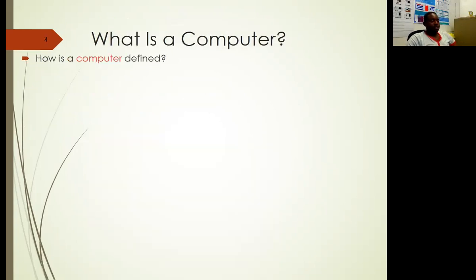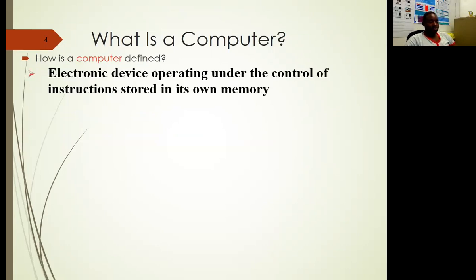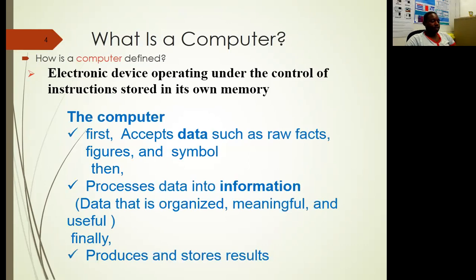So what is a computer? A computer is an electronic device which operates under the control of instructions, and these instructions are stored in its memory. The computer first accepts data — which is raw facts arranged in the form of symbols or figures — then it processes the data into information. Information is data that is organized and becomes useful and meaningful, and then the information is produced and stored for future use or for use in other equipment.